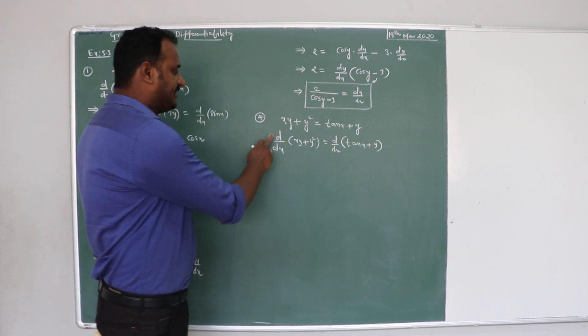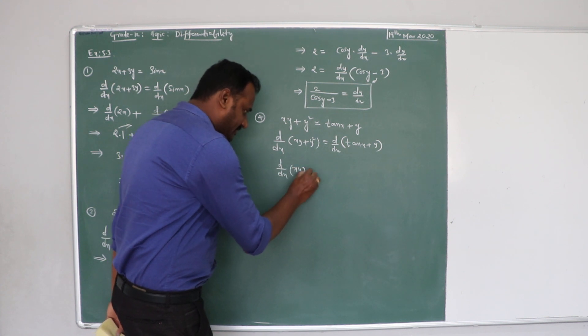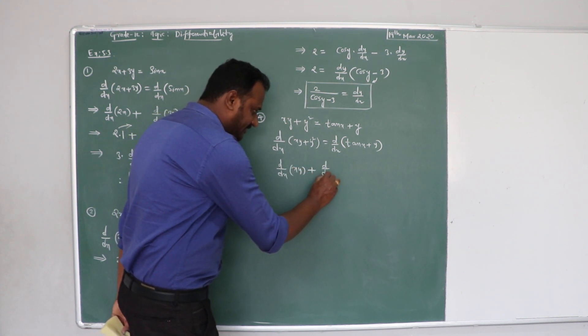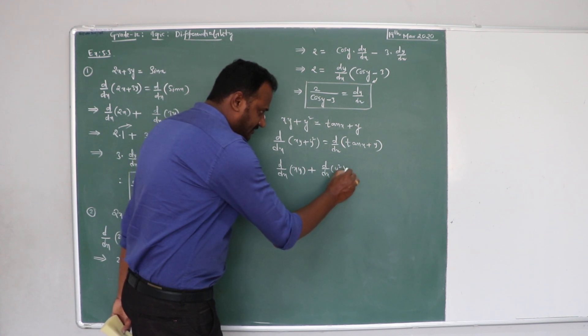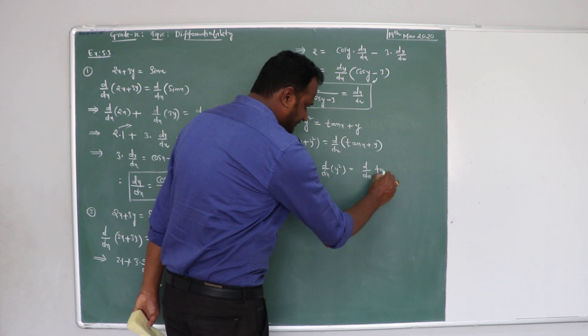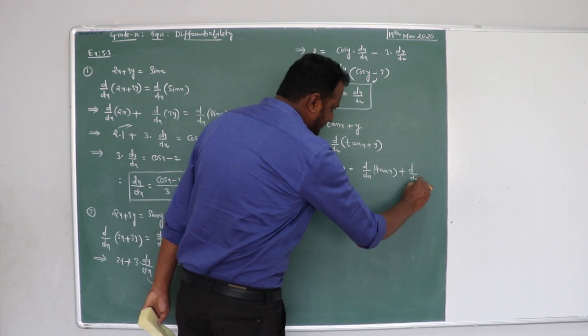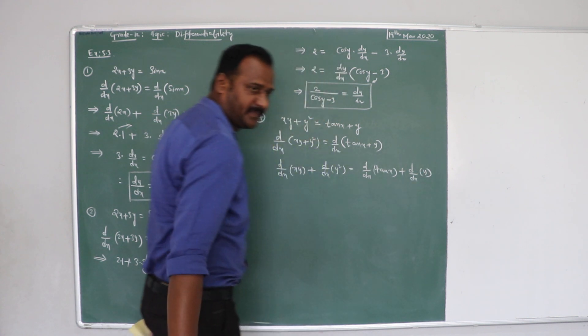So, d by dx of xy is d by dx of x times y plus d by dx of y squared is equal to d by dx of tan x plus d by dx of y. Right?